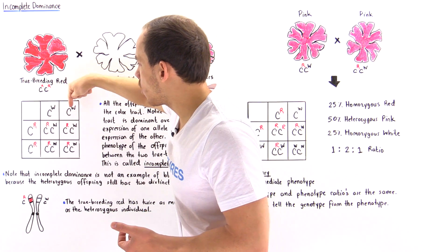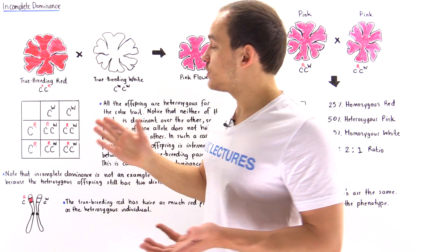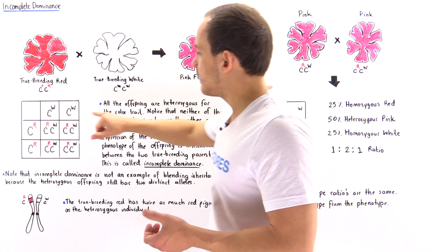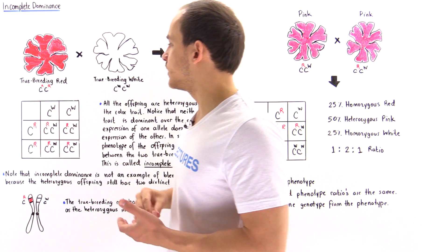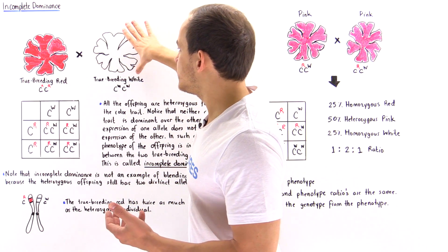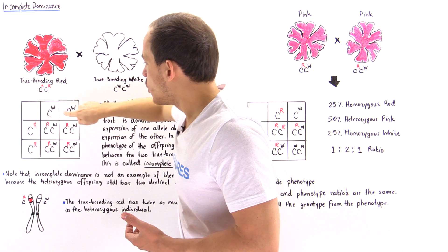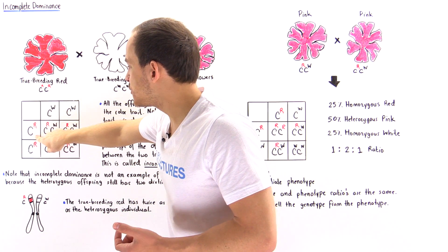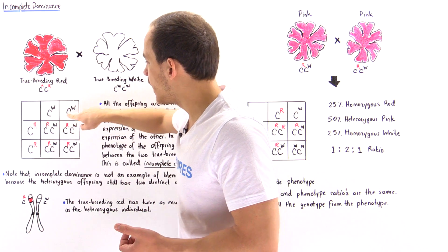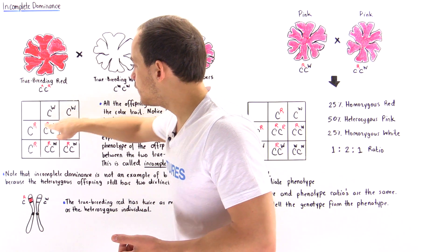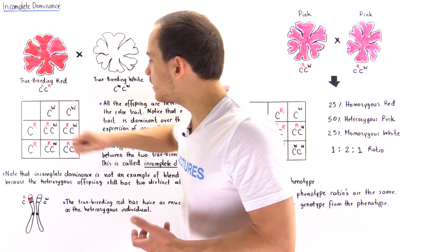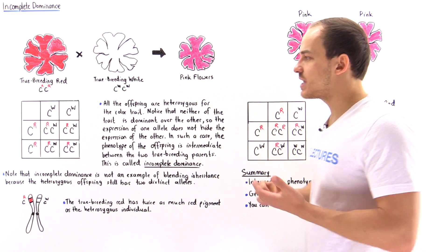Likewise, the two gametes produced by the true breeding white plant are CW and CW, where W stands for the color white. Let's say this is the female and this is the male. When this egg cell combines with this sperm cell, we produce a heterozygous individual, and likewise, when each one of these egg cells and sperm cells combines, all of these individuals will be heterozygous.